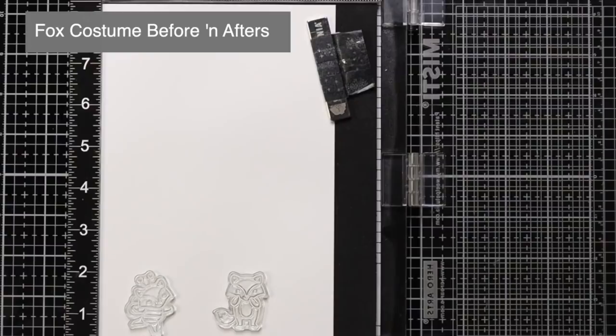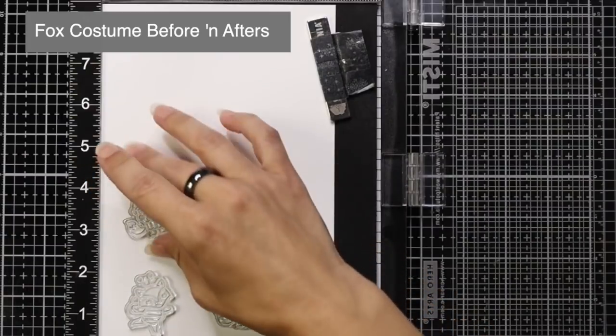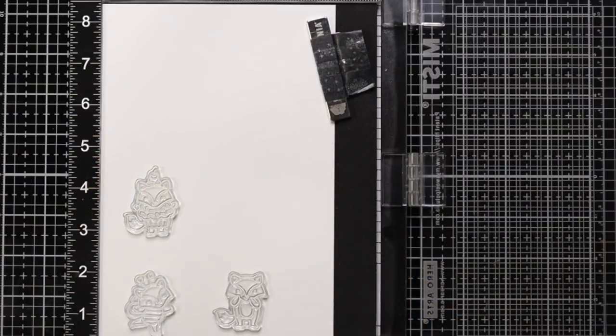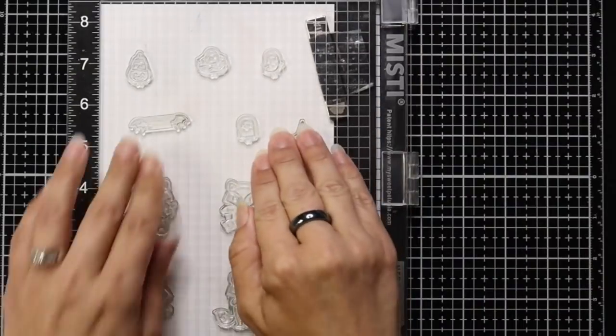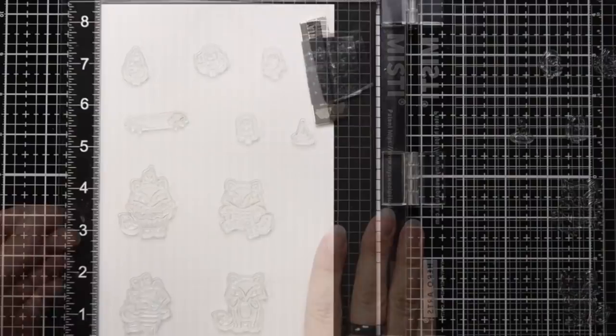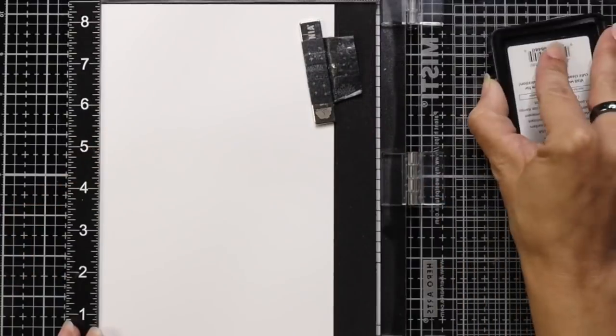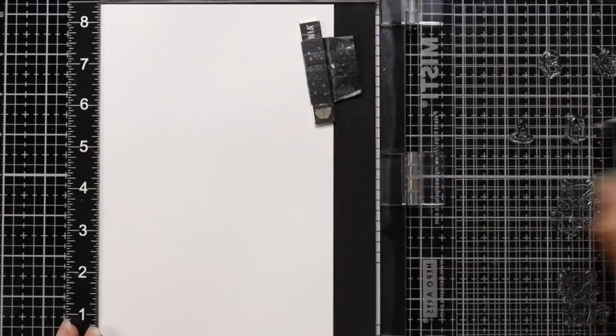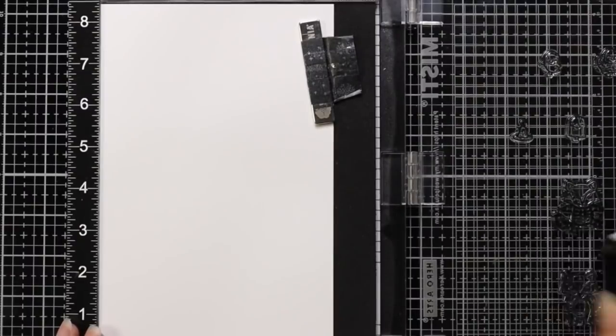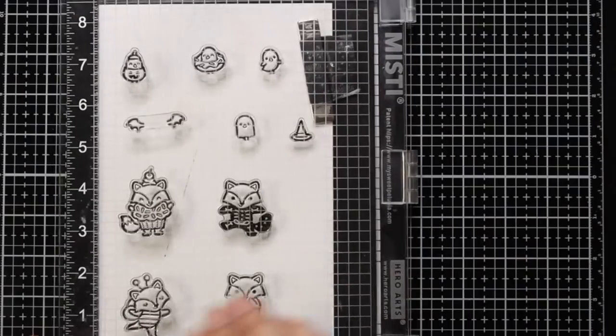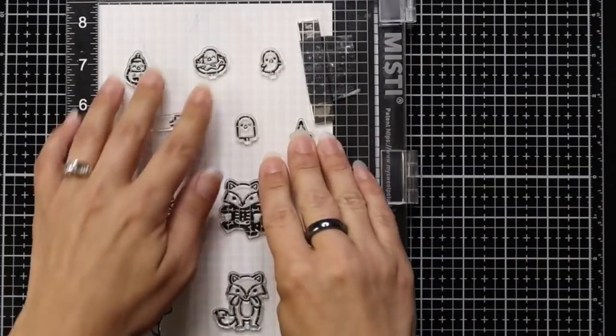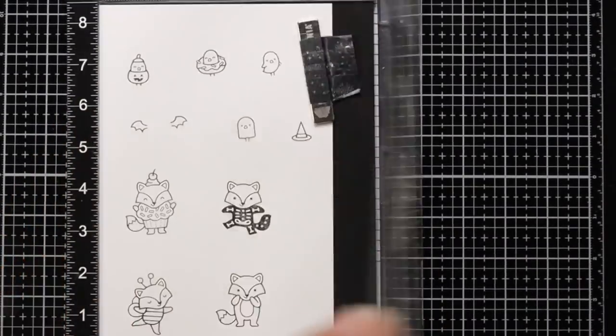For today's card, I am using the fox costume before and afters. I'm arranging a lot of the images off of this set because they were so darn cute, I just couldn't resist adding all of them. I'm using Lawn Fawn white cardstock, loaded the images into my MISTI stamping tool so I can stamp all of them at once, and then I'm inking it up with Lawn Fawn jet black ink, which is Copic friendly.